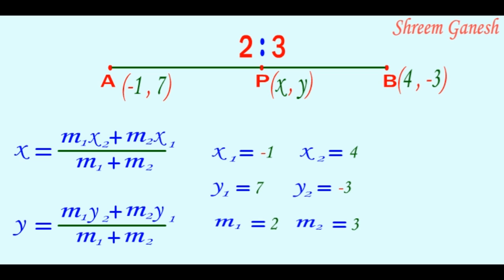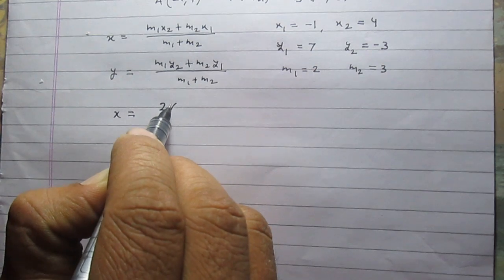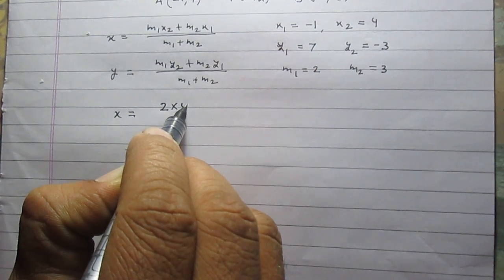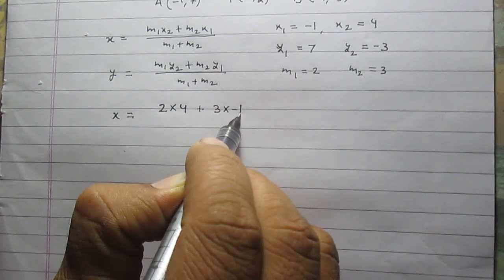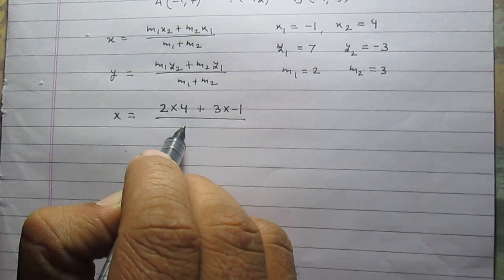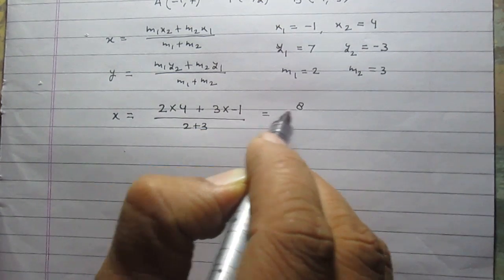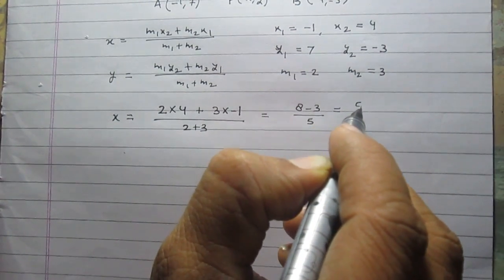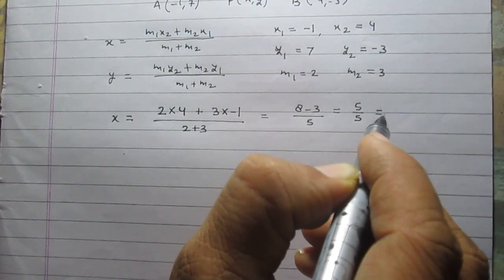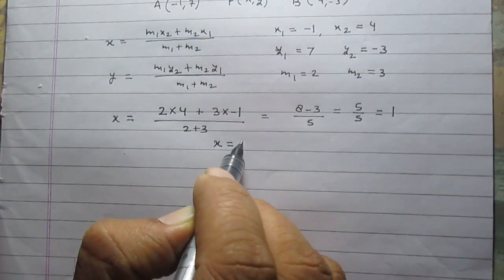So after substituting these values in the section formula we will get x = (2×4 + 3×(-1))/(2+3), which is (8-3)/5. 8 minus 3 is 5, so 5 divided by 5 is the value of x which is equal to 1. So value of x-coordinate of point P is equal to 1.